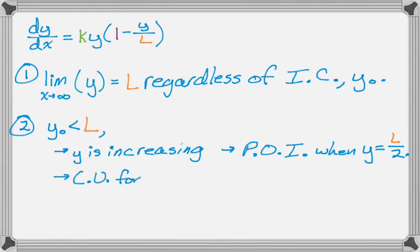So concavity, it's going to be concave up until you get to L over 2. And then it's going to be concave down after that. And then as I stated in number 1, the limit is going to be L. Okay, so those are things you know if the initial condition is less than L.